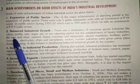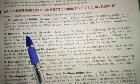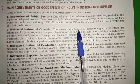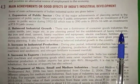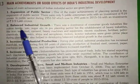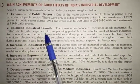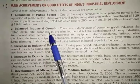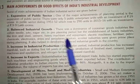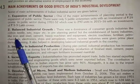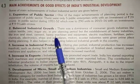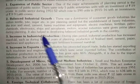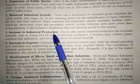Next is balanced industrial growth. Earlier there was a dominance of consumer goods industries like cotton, textile, jute, sugar, etc., which grew at a large scale because raw material was easily available. But due to industrialization, we shifted to heavy industries also — like iron, steel, cement, heavy machines — and a balance between the two types of industries was created. Next is increase in industrial production: as the number of industries increases, production also increases simultaneously.